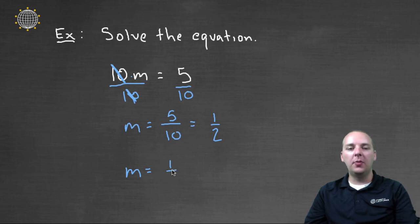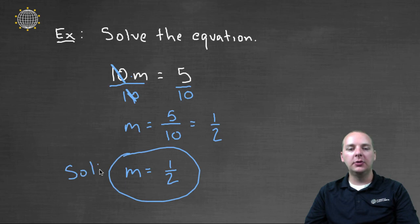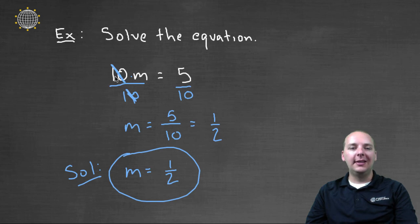And just like before, we can go back and check our answer. If we think one half is our solution for m, let's go back to the original equation. Ten m equals five. Ten times a half is five. So that is in fact the correct solution.